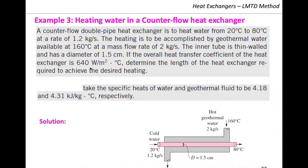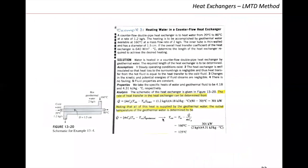We were evaluating a common solution technique that requires getting the missing temperature. As you can see, we have only one temperature for the geothermal water — we don't have the outlet temperature. So the idea was to do the energy balance on the cold water, because that's the stream where we know both temperatures. We can get the missing temperature out of the stream where we have both temperatures available. That's a very common way to solve this kind of problem with the LMTD method.